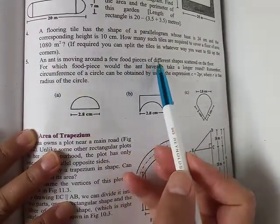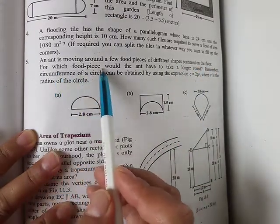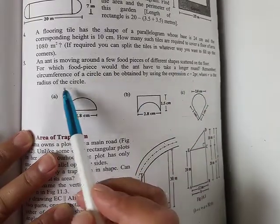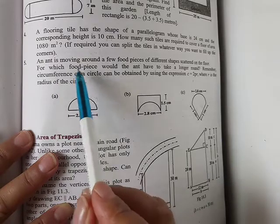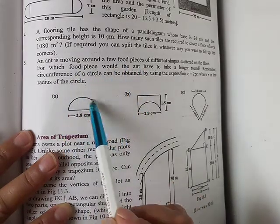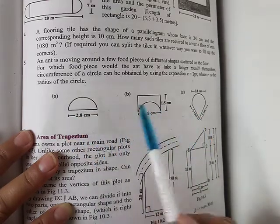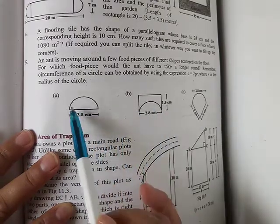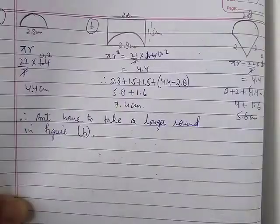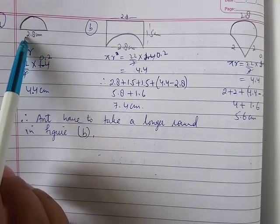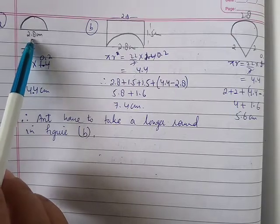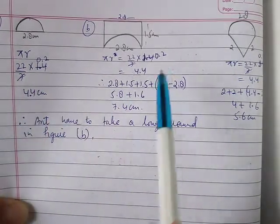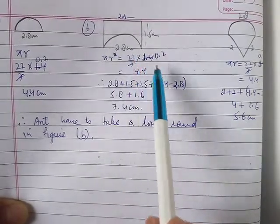Question number 5: An ant is moving around food pieces of different shapes scattered on the floor. For which food piece would the ant have to take a longer round? Remember, circumference of a circle can be obtained using c = 2πr, where r is the radius. For the first one, the diameter is 2.8, so radius is 1.4. The semicircle perimeter: π times radius 1.4 equals 4.4 centimeters. Then we add the straight lines: 2.8, plus 1.5, plus 1.5, giving a total of 7.4 centimeters.